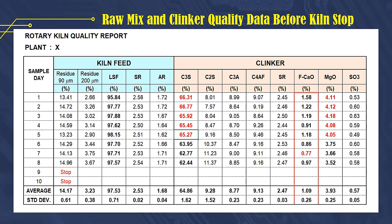This confirms the experiments conducted by experts, that MGO content of more than 3.5% can reduce the burning power of raw meal and increase the free lime content in the clinker. Because what is generally controlled by the kiln operator is free lime, when getting a high free lime report, the operator immediately takes action by adding fuel or reducing kiln feed. It is also evident that when MGO is reduced to close to 3.5%, C3S is also reduced to close to the 62% target.